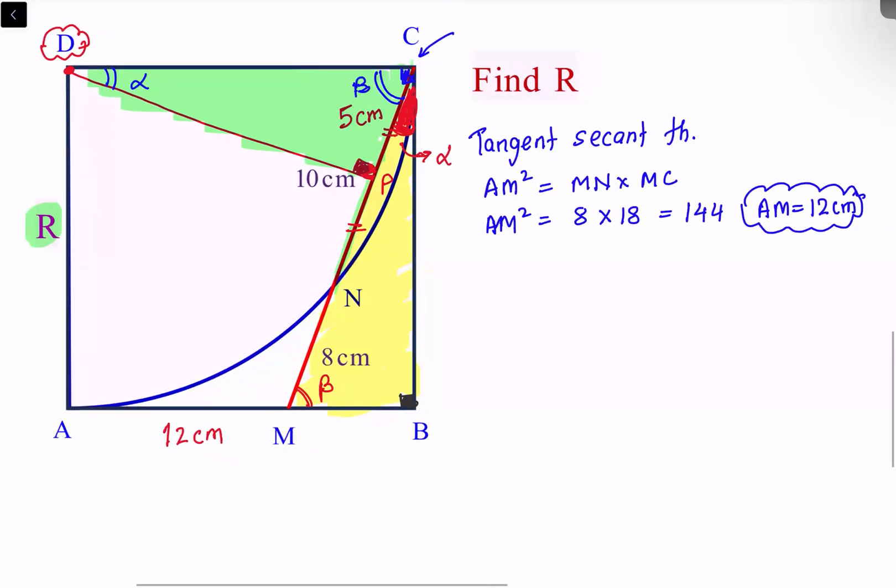So we have triangle MBC that's similar to triangle CPD. These two triangles are similar, and in similar triangles the ratio of sides are equal. Let's see what sides are available to us.